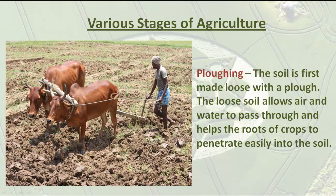There are various stages of agriculture. We start with plowing — the soil is first made loose with a plow. The loose soil allows air and water to pass through and helps the roots of crops to penetrate easily into the soil.